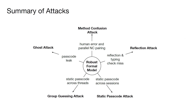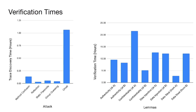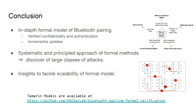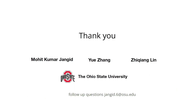To summarize, with one single robust model we derive five different attacks. Overall, our model verifies the confidentiality and authentication properties of the pairing protocols, and it takes about one and a half days to complete verification, whereas attack traces can be discovered within a few hours. To conclude, we present an in-depth formal model for Bluetooth pairing that can co-exist with updates in the Bluetooth specification. We suggest that a systematic and principled approach of formal methods can discover large classes of attacks, and we provide insights to tackle scalability challenges. Our Tamarin models are available on GitHub.